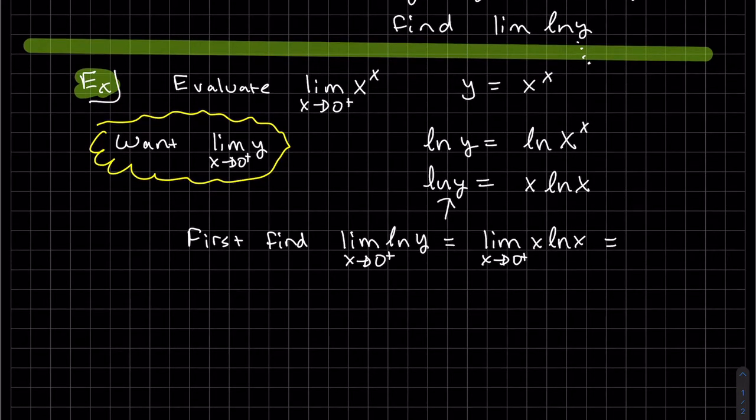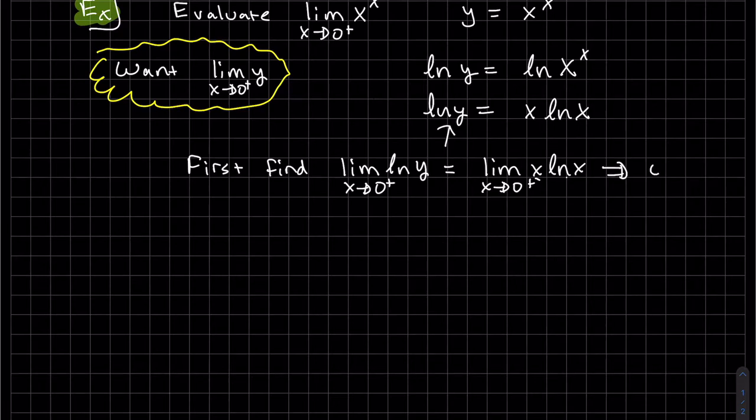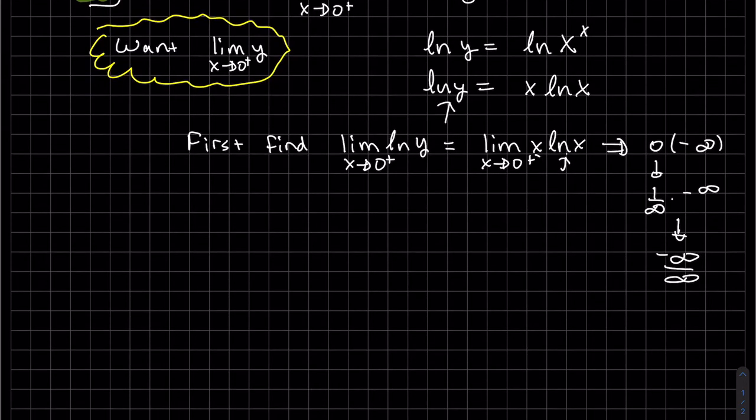When we plug in zero, this approaches zero, and zero to the right of natural log of x is a negative infinity. So this is our indeterminate form, zero times infinity, so we're going to have to bring one of them to the bottom. If we bring this to the bottom, we'll have to raise that to the negative one power, then use the chain rule. But if we bring this to the bottom, we'll just have polynomials left.